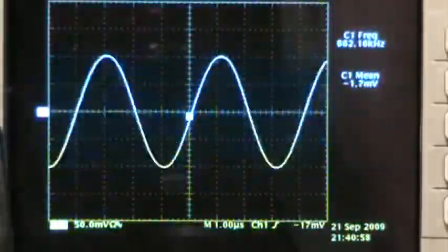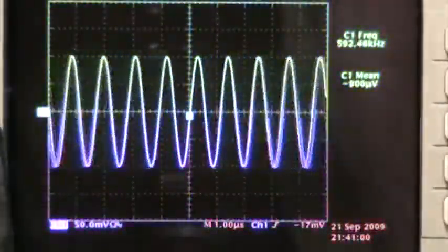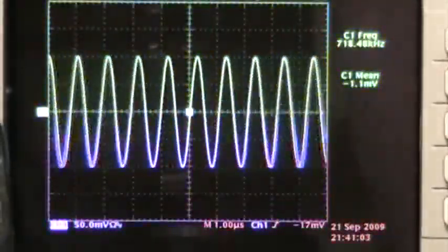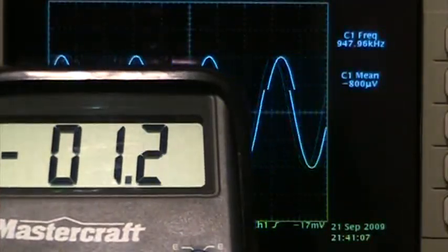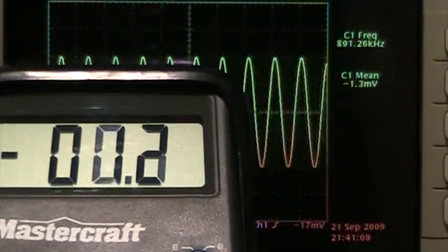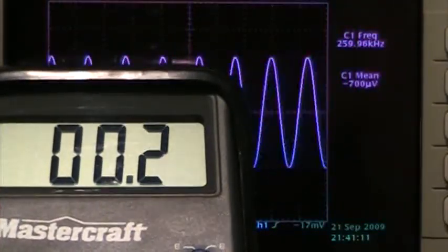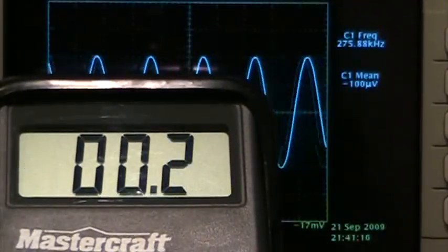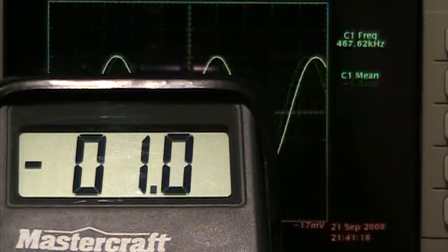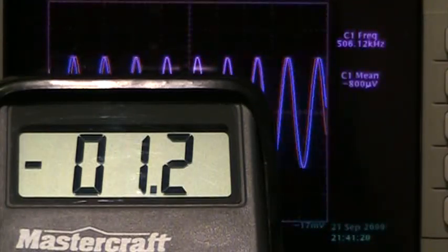Now let me just take it back there again and let's look at the Mastercraft. Now it too is having a hard time with this. It's fluctuating minus 1.2 to plus 0.2, so it's kind of all over the map too.